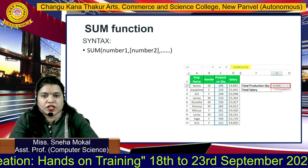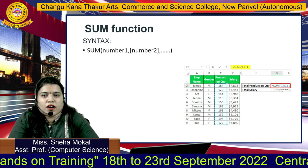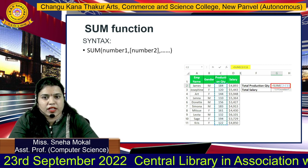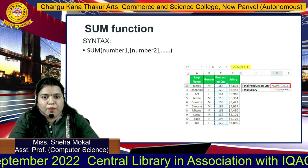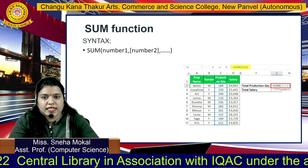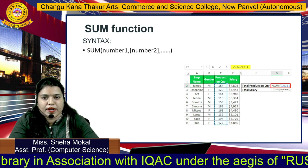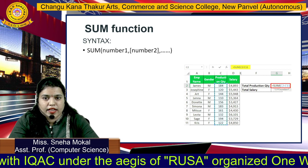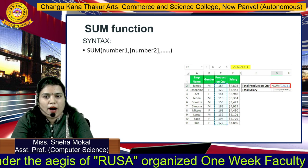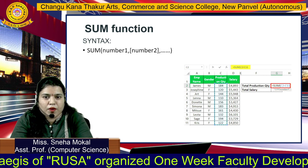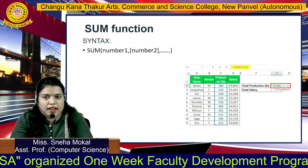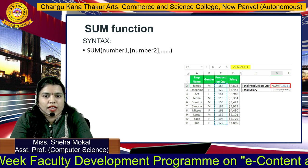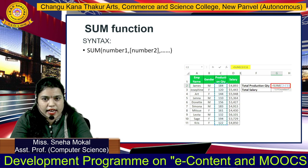So next is the SUM function. Sum function means — आपके जो पूरे numbers रहेंगे उनका addition मतलब sum रहता है. आपको क्या करना है — यहाँ equal to डालके sum function को डालो. उसमें parameter pass करना है, सारे numbers pass करने हैं जिनका आपको sum चाहिए. Suppose आपने sum में डाला 1, 2, 3 — तो उनका addition होके आपको result आ जाएगा.